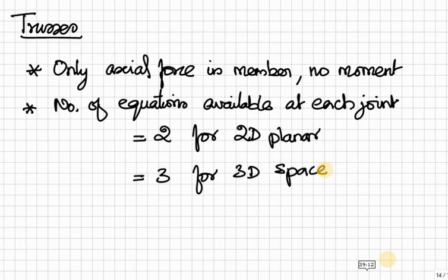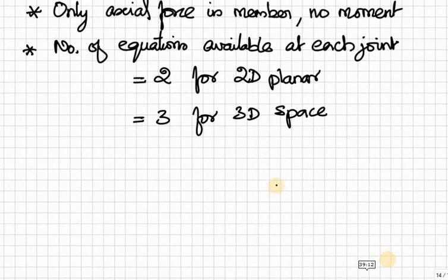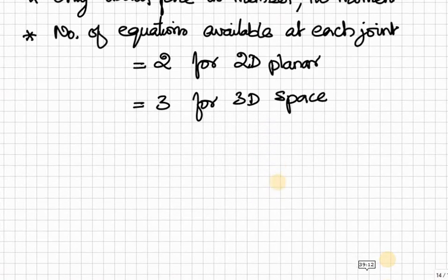Therefore, for equilibrium condition or determinate structure condition, the total number of unknowns should be equal to total number of available equations. That is, M plus R is equal to 2J for 2D planar trusses. M number of members, R total number of reactions, J number of joints.